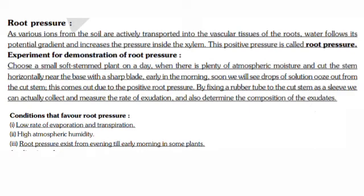Experimental Demonstration of Root Pressure: Choose a small soft-stemmed plant on a day when there is plenty of atmospheric moisture and cut the stem horizontally near the base with a sharp blade. Early in the morning, we will soon see drops of solution ooze out from the cut stem. This comes out due to positive pressure, which is called root pressure. By fixing a rubber tube to the cut stem as a sleeve, we can collect and measure the rate of exudation and also determine the composition of exudates.